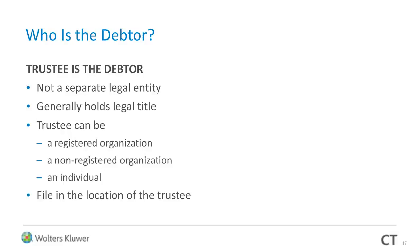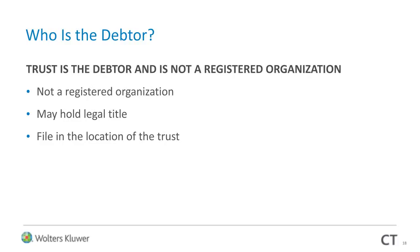For example, if I'm an individual residing in Illinois, you would file in Illinois. If it's a registered organization registered in Delaware or South Dakota, you would file in South Dakota. You start seeing similarities between trust work and general corporate UCC filings. The intent here is to demystify some of the areas around trust work. Next scenario: the trust is a debtor and is not a registered organization. Certain trusts are not registered organizations yet may hold legal title to property. In those cases, file at the trust's location following the rules for a non-registered organization.